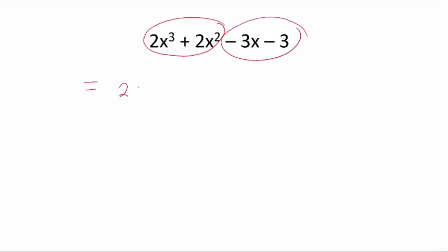I'm going to pull out 2x squared, and then an x is left inside, plus 1, and here I'm going to pull out negative 3, and inside we'll end up with x plus 1.